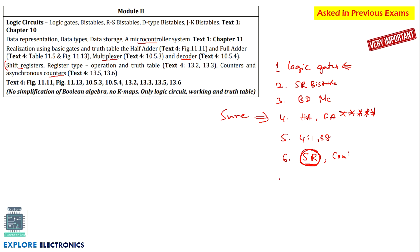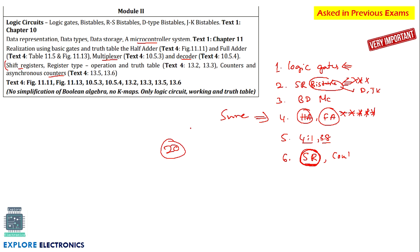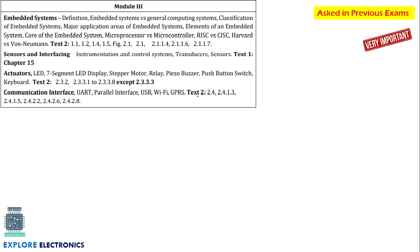In Module 2, one sure question is SR bistable — or you may get D bistable or JK bistable. Half adder and full adder is very very important. If you also study the 4-to-1 MUX, 3-to-8 decoder, and shift register, you can easily get 20 marks in this module. This is a very easy chapter.